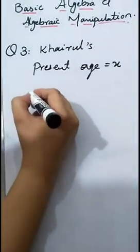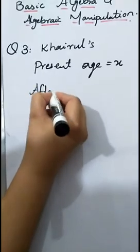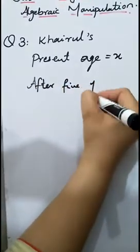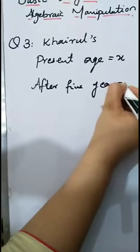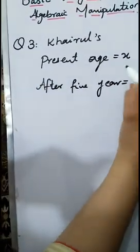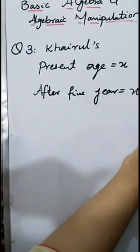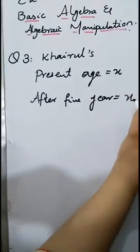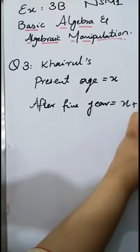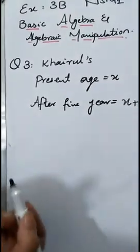After 5 years, Harold's age will be: as the present age of Harold is x, now after 5 years we will add 5 years to his present age. His present age is x, so after 5 years it will become x plus 5.